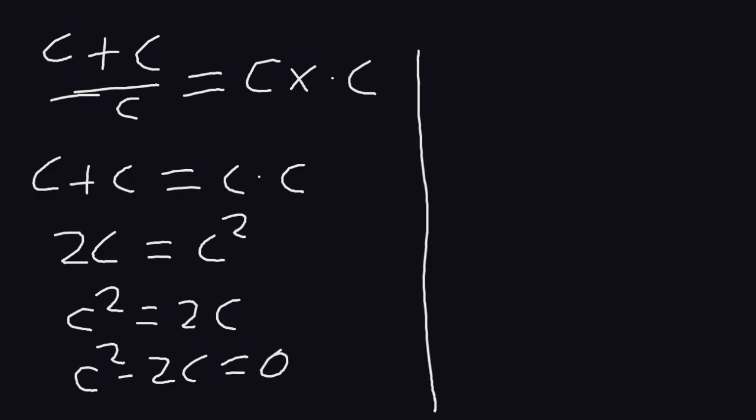We know that if c is common, then we can factor it out. So we have c times (c minus 2) is equal to 0.